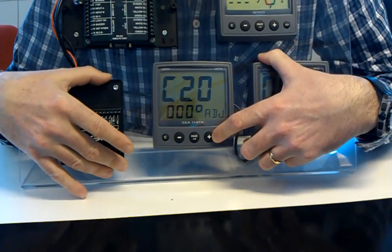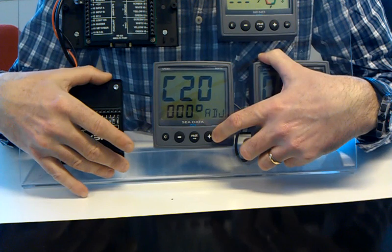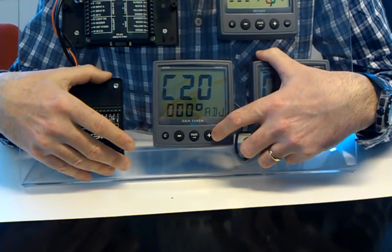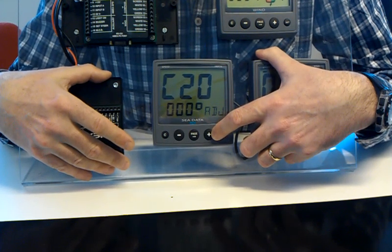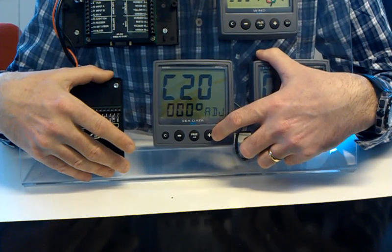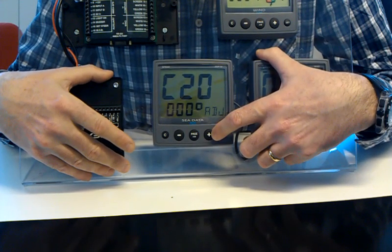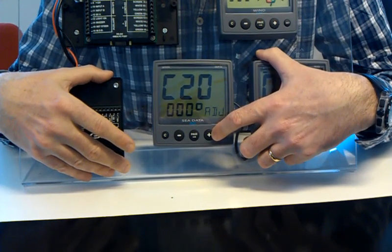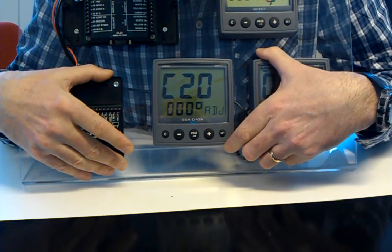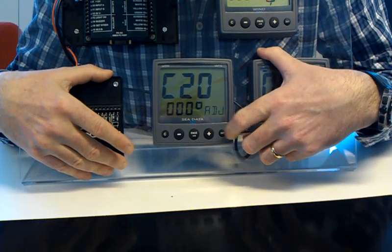C20 is also a calibration for the wind angle. Now, say for example you can't mount the wind transducer over the center line of your boat, forward facing. Let's say, for example, that on my boat, because I've got a VHF antenna in the way, I've had to mount my wind transducer 10 degrees off to starboard. So, what I'm going to do is alter that to compensate the system for that.